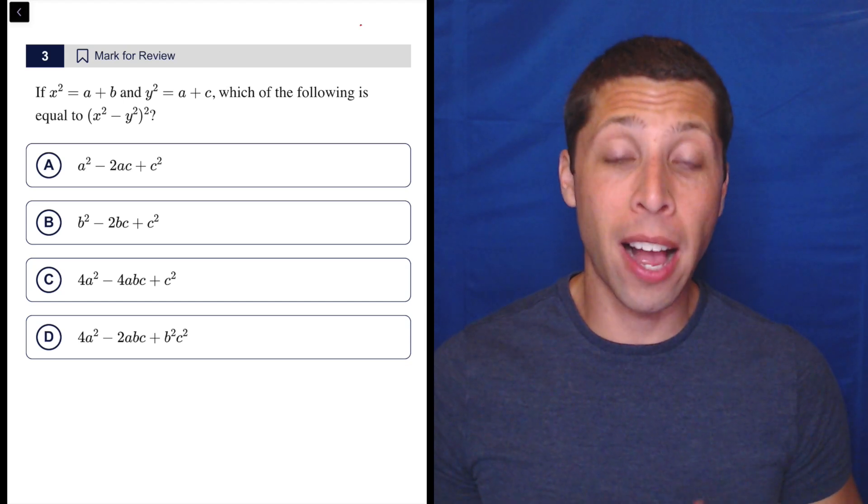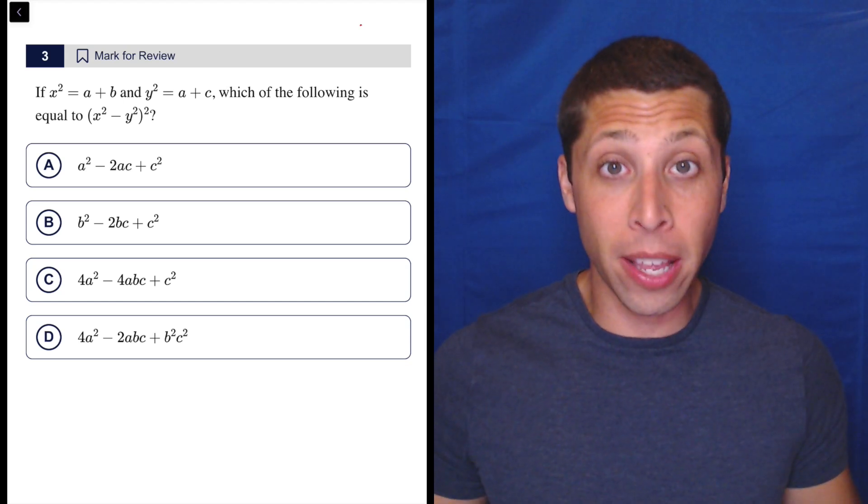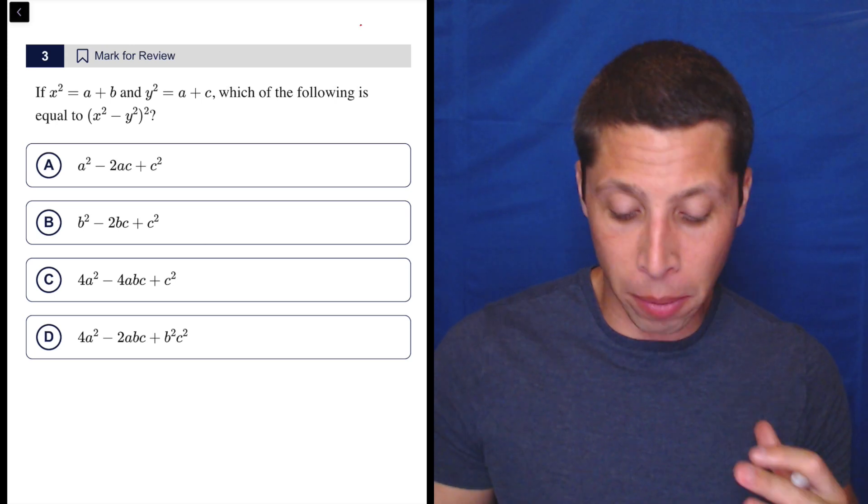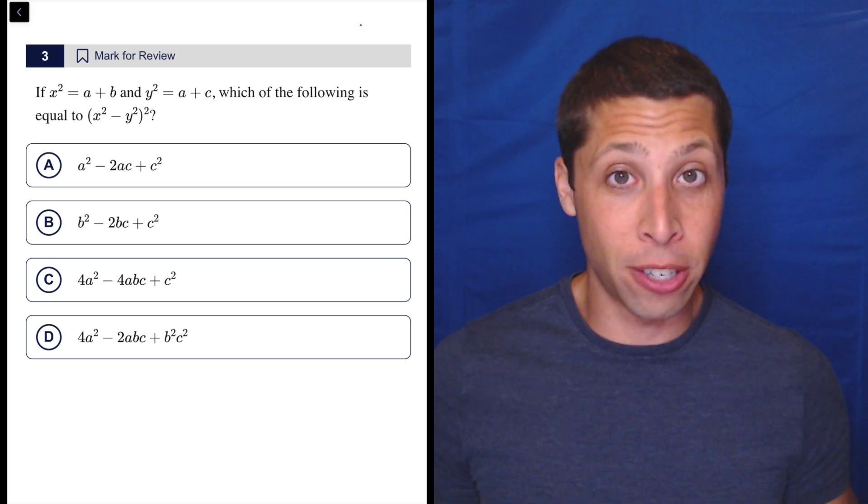So here's a great example where I think arithmetize might not be the most efficient way to do it, but it's certainly better than nothing. If you were looking at this and you're like, oh my God, there's an A, there's a B, there's a C, there's an X squared, there's a Y squared, there's a lot going on here. I don't know how to deal with this.